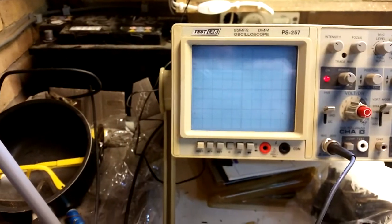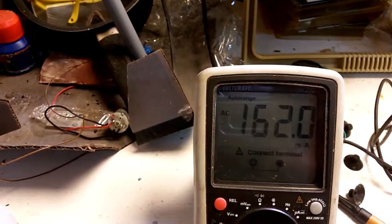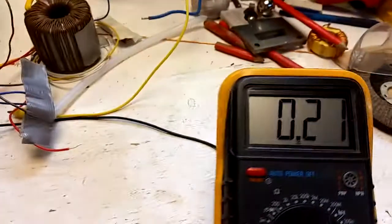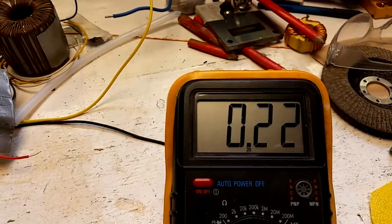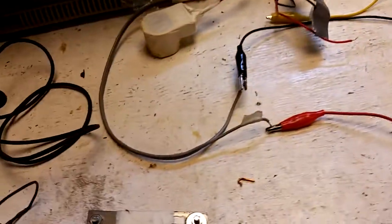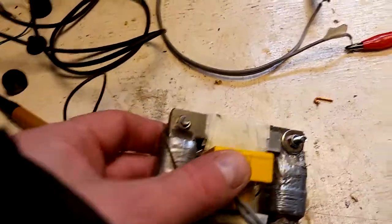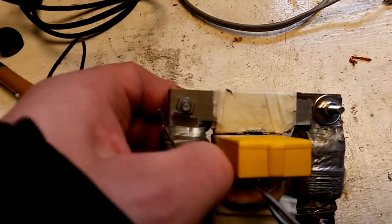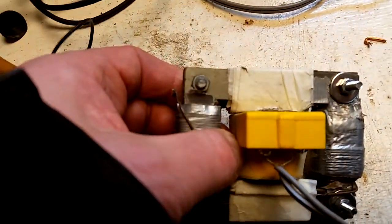My scope is back on. There we are. Nice sine. 162 milliamps. The input dropped to 210, 220 instead of 230, 240 because of the better coupling with the core and the lamination.